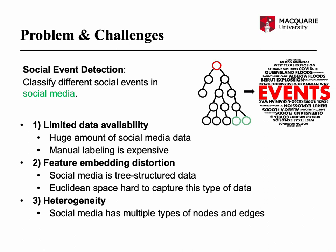The second one is the feature embedding distortion. The spread of social media is mainly based on mentions and following between people. This results in social media data having a tree structure, and embedding tree structure data into Euclidean space will lead to distortion of features.